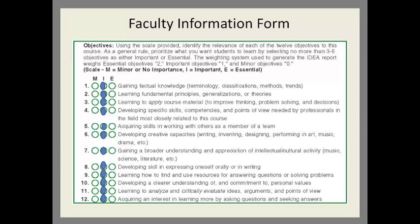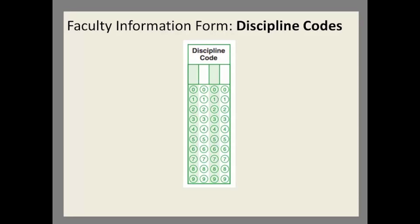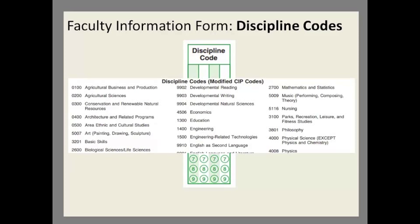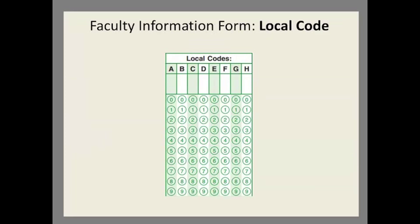The Faculty Information Form includes some other items to be completed. For example, you'll be asked to select the discipline in which you are teaching — the purpose of this item is to provide you with comparison data in your report. The local code field is a section of the form that allows institutions to capture data for their own research purposes, such as comparing online courses to traditional courses, or part-time instructors to full-time instructors. Institutions can decide what types of data they would like to capture and how they would like to mark the local code.